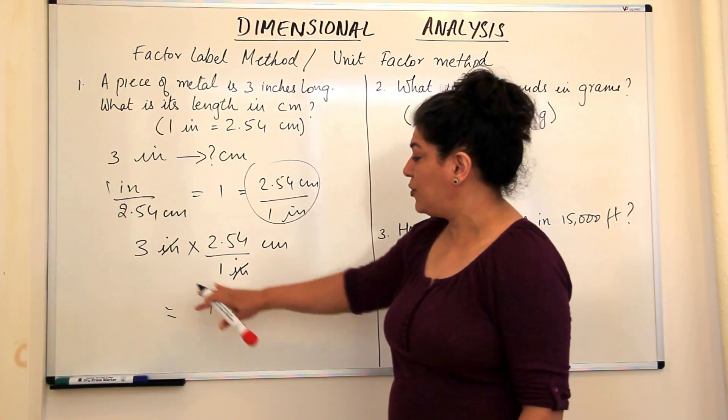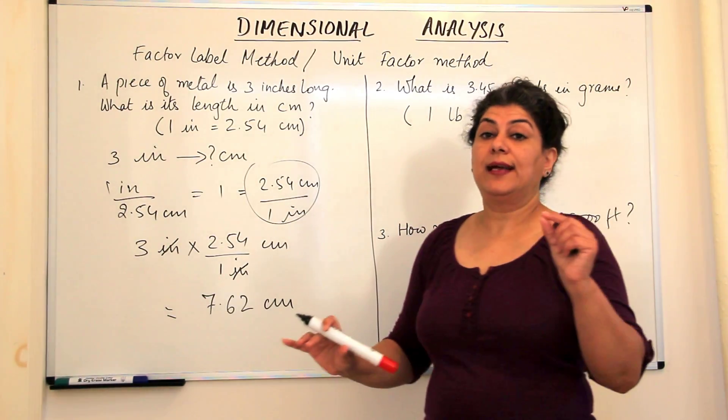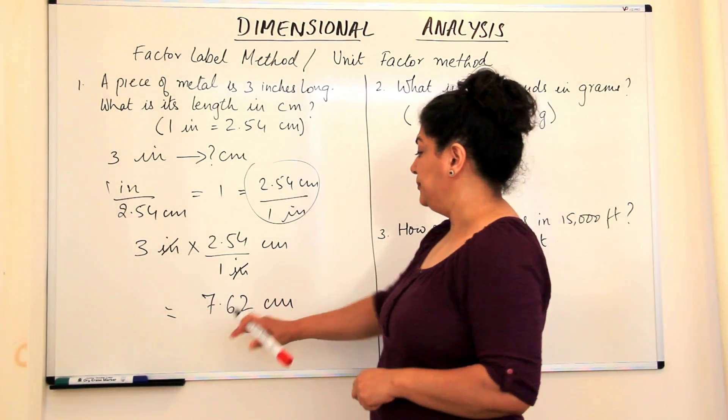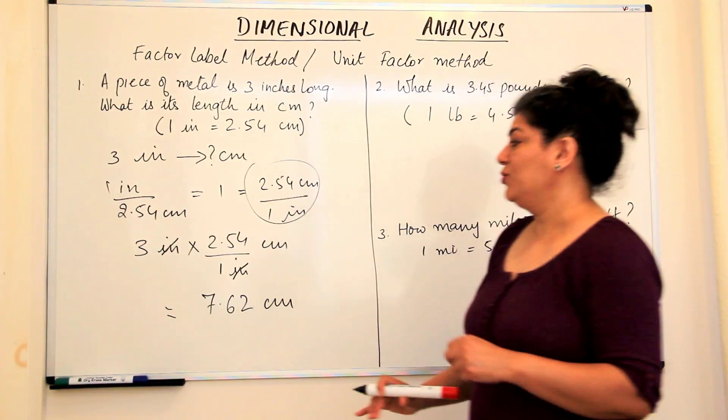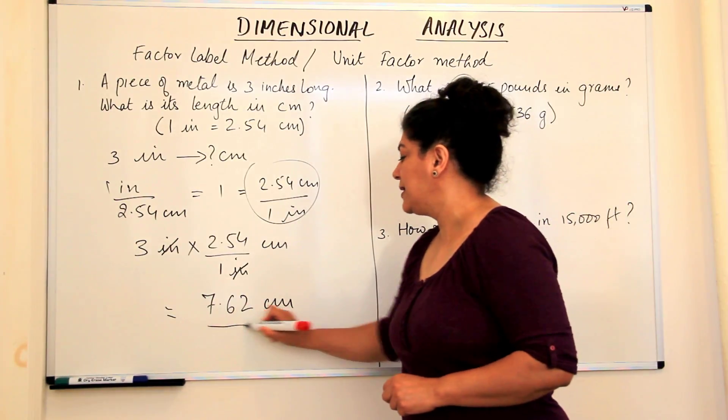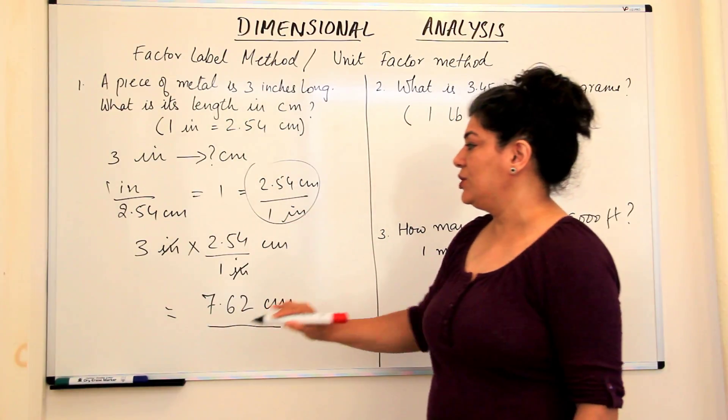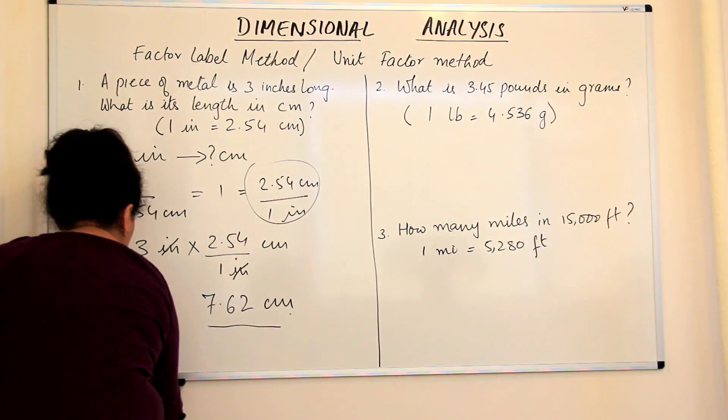If you solve this you get 7.62. Remember when you're solving this problem you have to consider that the denominator is 1, because sometimes it may be a different number. The answer you get here is 7.62 centimeters. So what have we done? 3 inches would be equal to 7.62 centimeters.